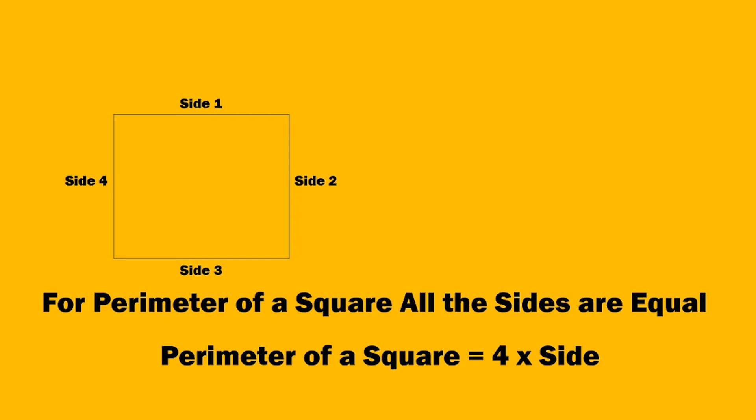The formula for parameter of a square is four into side. What is four? Four is basically the four sides of a square. So the formula is four into one side — it can be any side. Why? Because all the sides are equal. So parameter of a square is four multiplied by any side.